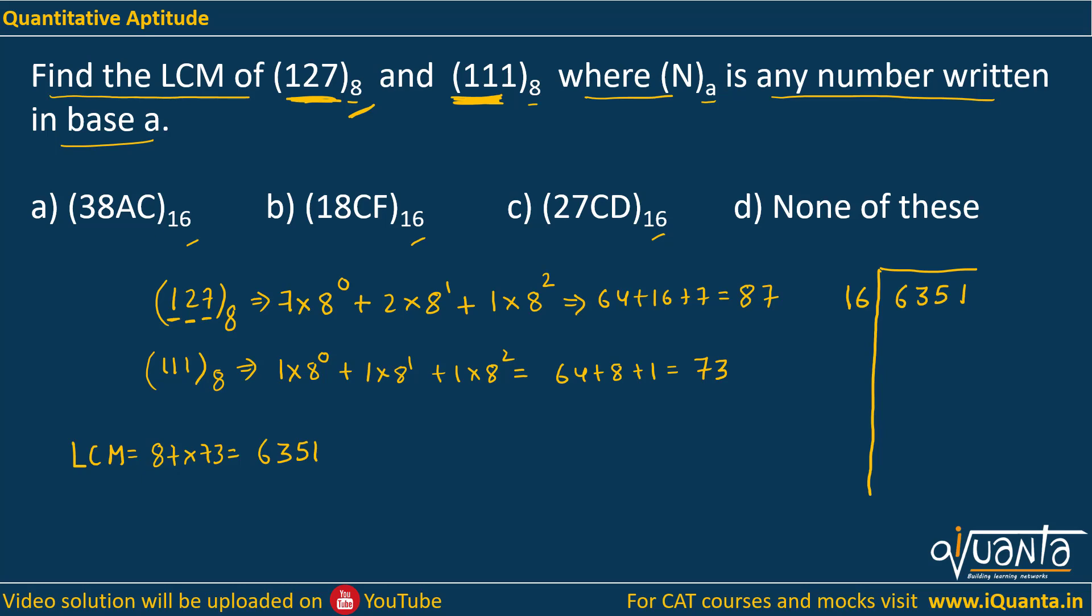When you do this, write the quotient and the remainders on the side. Dividing 6351 by 16, we work through the long division. First division gives 396 with remainder 15.